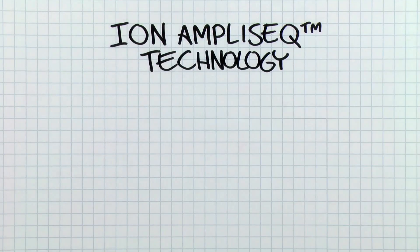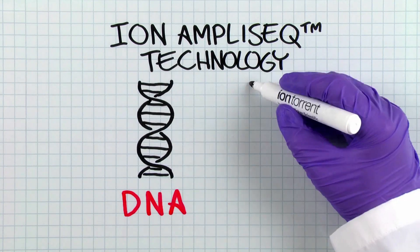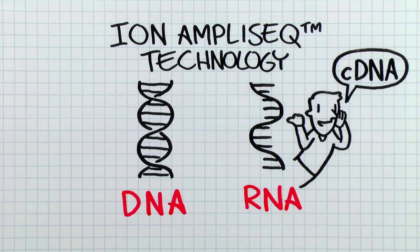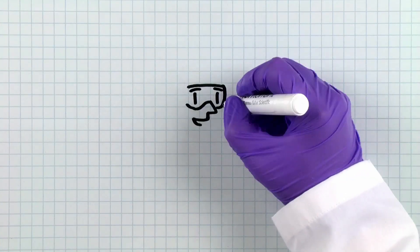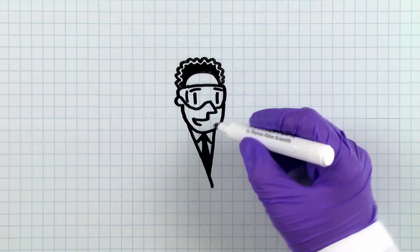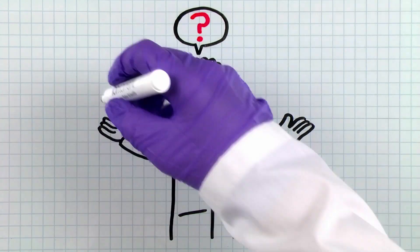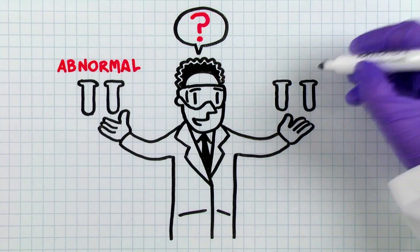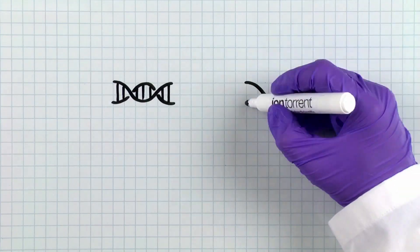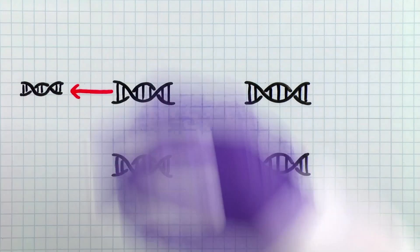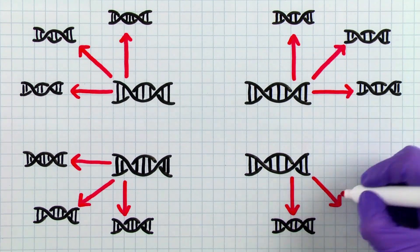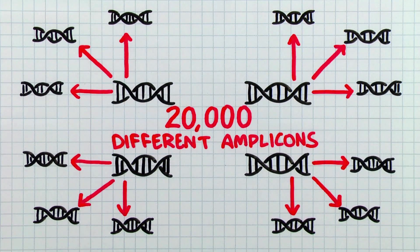Let's take a look at our lab book. First off, Ion Amplicy Technology can be used to sequence both DNA and RNA — well, actually the RNA is first converted to cDNA. Ion Amplicy RNA sequencing is commonly used to answer gene expression questions, such as which genes are differentially expressed in my abnormal or diseased research sample compared to my control? In fact, the ability to highly multiplex the enrichment process with Ion Amplicy chemistry means that a single PCR reaction can be used to generate greater than 20,000 different amplicons.